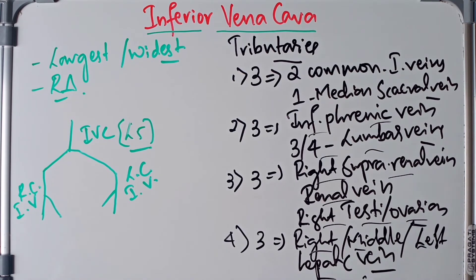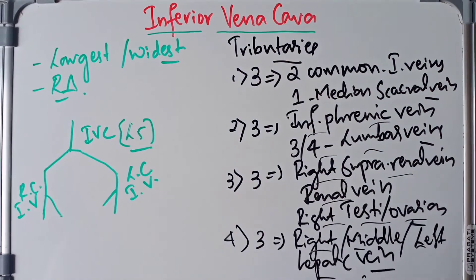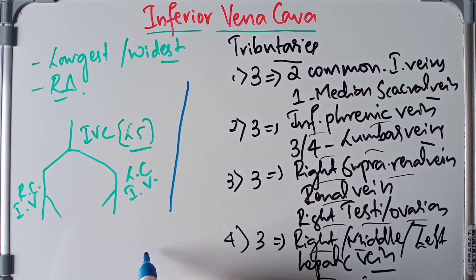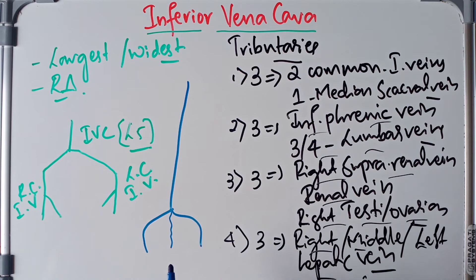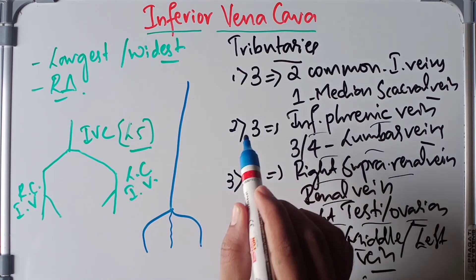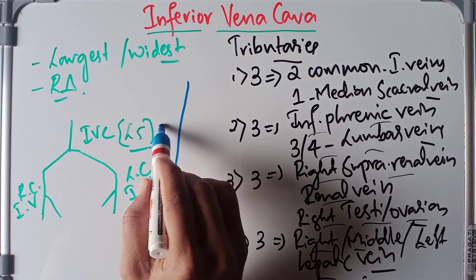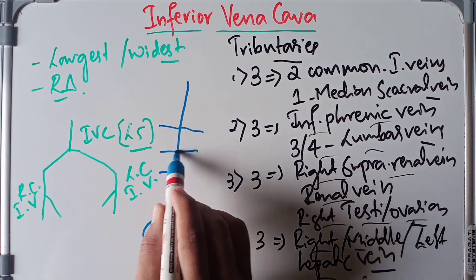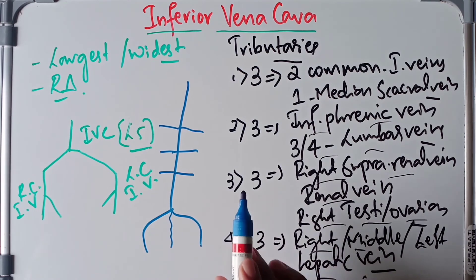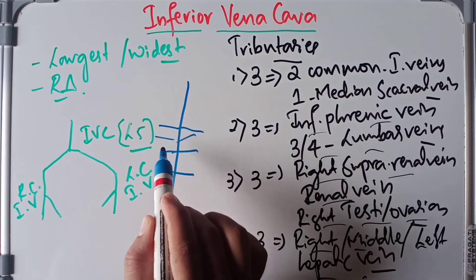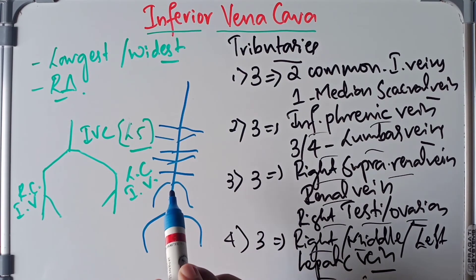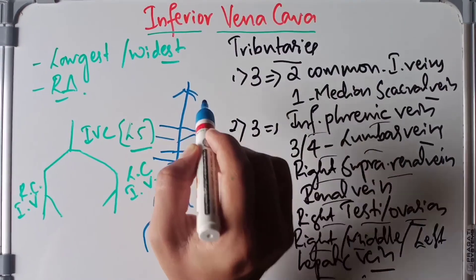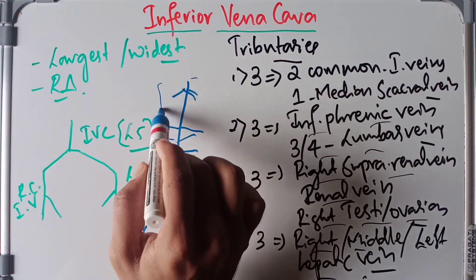Drawing the inferior vena cava: it is formed by the right and left common iliac veins with the median sacral vein. The three abdominal wall tributaries — inferior phrenic vein and third and fourth lumbar veins — join it. The three lateral visceral tributaries — suprarenal vein, renal vein, and right testicular or ovarian vein — also drain into it. Finally, the three anterior visceral tributaries, the right, middle, and left hepatic veins, come from the portal system.